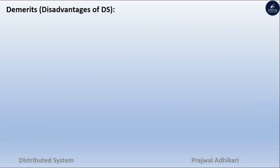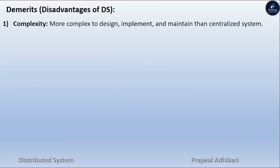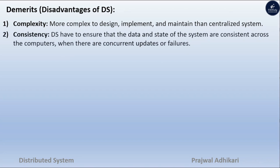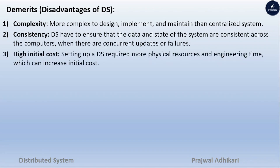Disadvantages of distributed systems. Complexity: More complex to design, implement, and maintain than centralized systems. Consistency: It has to ensure that the data and state of the systems are consistent across the computers when there are concurrent updates or failures. High Initial Cost: Setting up a distributed system requires more physical resources and engineering time, which can increase the initial cost.